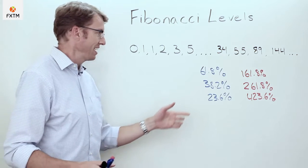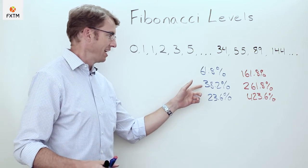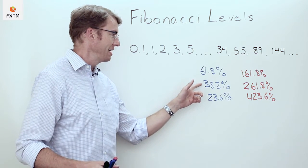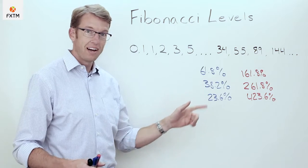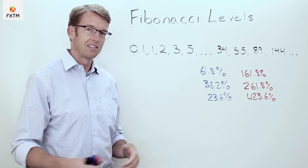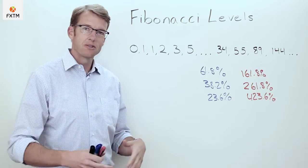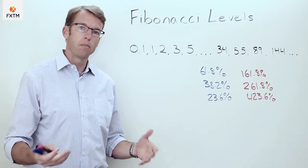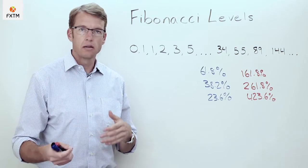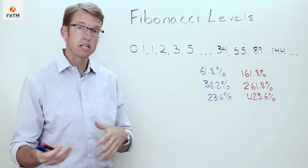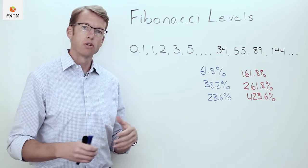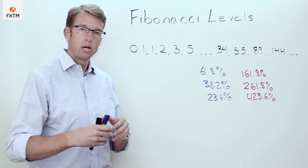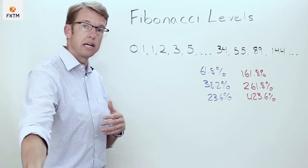The Fibonacci number series and its ratios can be a lot of fun. We can go even deeper — for instance, dividing 38.2 by 61.8 gives 61.8 again. But these ratios are also really helpful for determining where we expect a retracement or correction against the prevailing trend to end, and how far the trend is likely to reassert itself afterward.